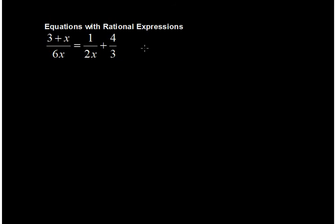Now rational expressions are just big fractions, so what we'd like to do to clear the fractions is multiply through by the lowest common denominator. The lowest common denominator in this case is 6x.